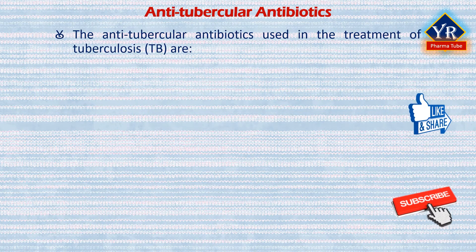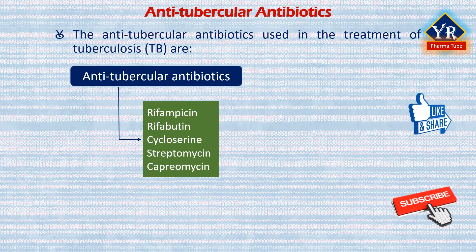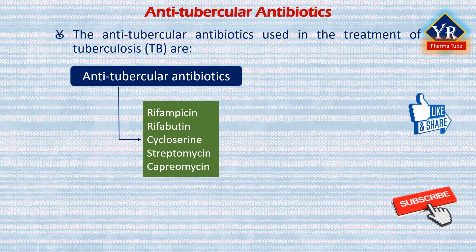The antibiotics used in the treatment of tuberculosis include rifampicin, rifabutin, cycloserine, streptomycin, and capreomycin. In this lesson, we shall discuss the first three drugs: rifampicin, rifabutin, and cycloserine.